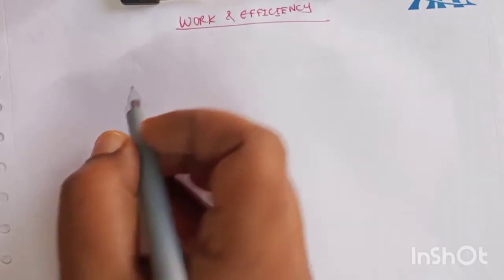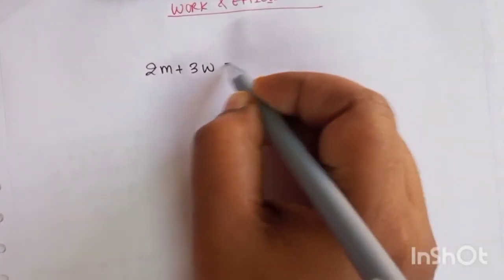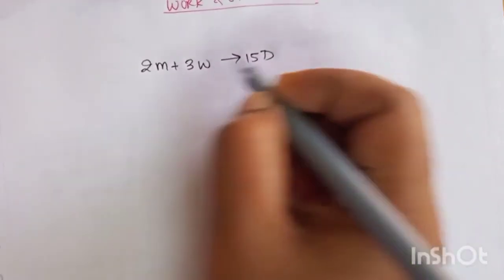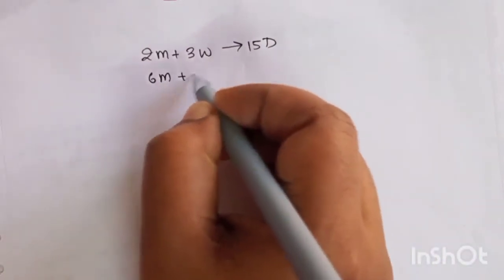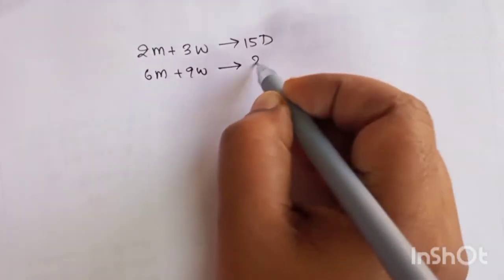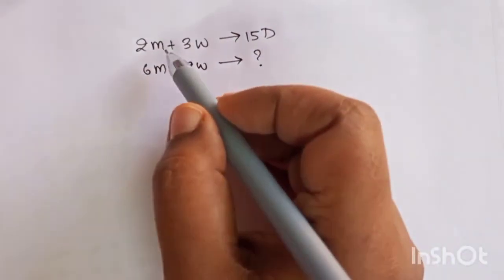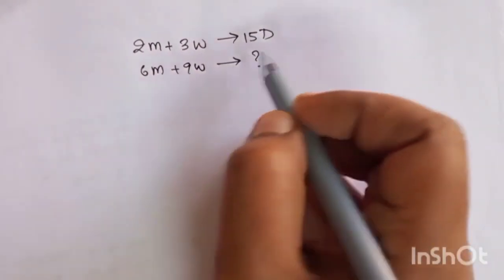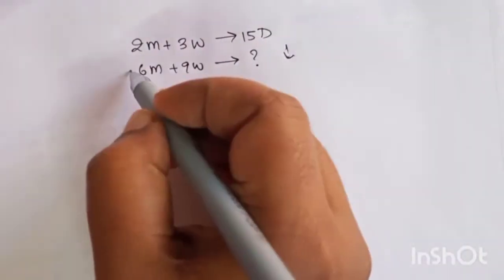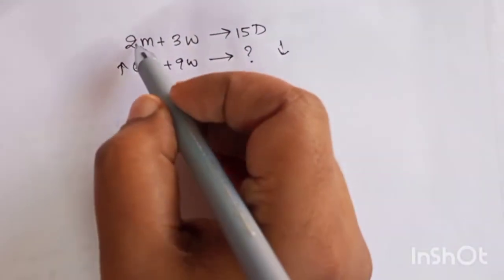Okay, let us see work and efficiency today. Now imagine two men plus three women are doing the work in 15 days. So if it is six men and nine women, how many days will it take? Common logic is that the number of people are increasing, so the number of days will decrease. But how much?